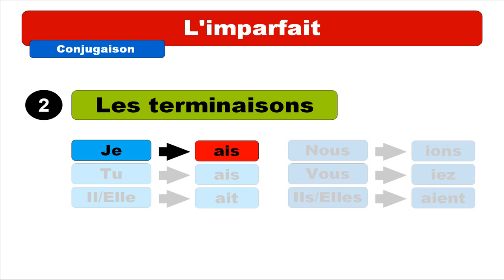Now we will see the second part — the endings. We saw how to get the stem; now the second part is the ending. For 'je', the ending will be '-ais' and you pronounce it like 'è' — open, don't be afraid to open your mouth. For 'tu', the ending is also '-ais', same writing and same pronunciation: 'è'.